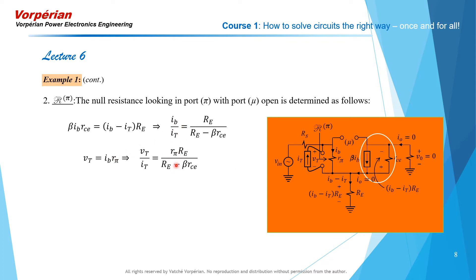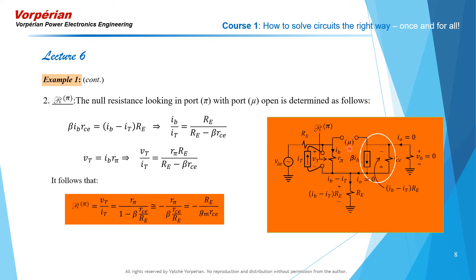Since V_T itself equals I_B·R_pi, we can solve for V_T / I_T — the null impedance looking into port pi with port mu open. For large beta and large R_CE / R_E, this approximates to minus R_pi / beta · (R_CE / R_E), but R_pi / beta equals 1/g_m, so we have our second null calculation for R_pi.